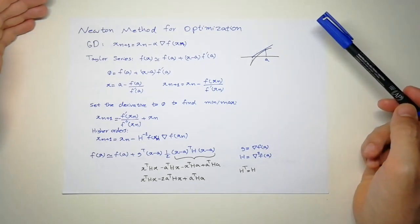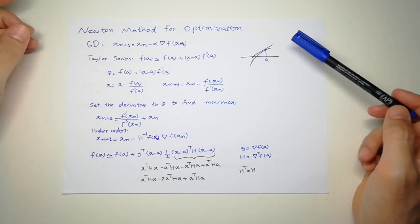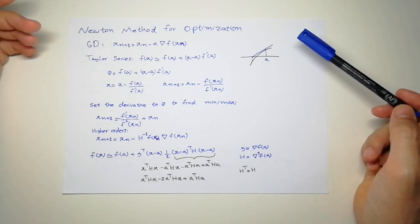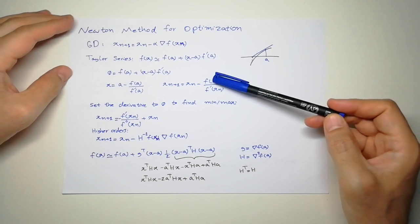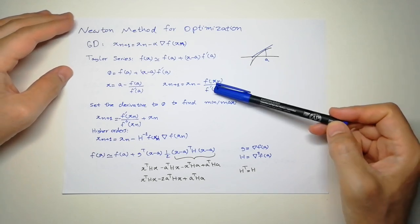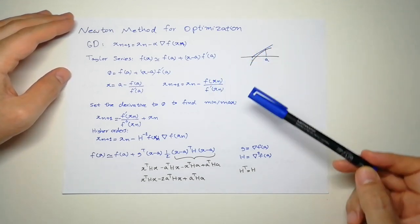And if you want to find the min or max of a function, you can imagine, take the derivative, set the derivative to zero, and do the same. So intuitively, here should be f prime, because now our function is f prime, and here should be the derivative of f prime, which is going to be a second order derivative.